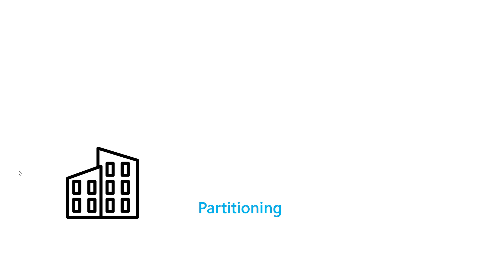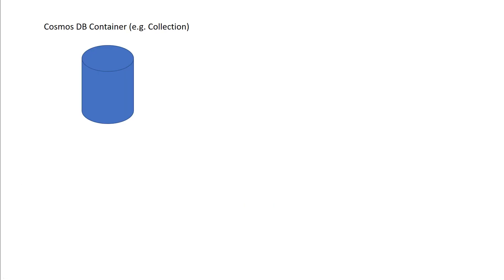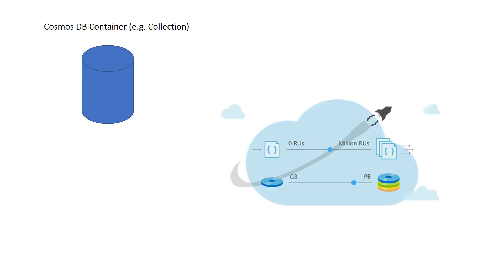In this video, let's take a quick walkthrough of partitioning in Cosmos DB. We'll begin by taking a look at a Cosmos DB container. The Cosmos DB container is a data model agnostic way of saying collection, graph, or table — you can use these words synonymously. A container is elastically scalable in nature and can scale across both storage and throughput as separate dimensions, from handling just a handful of requests per second across a small data set, to tens of millions of requests per second across many petabytes of data.